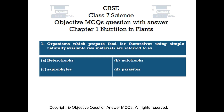Question number 1. Organisms which prepare food for themselves using simple naturally available raw materials are referred to as. Option A: heterotrophs. Option B: autotrophs. Option C: saprophytes. Option D: parasites.